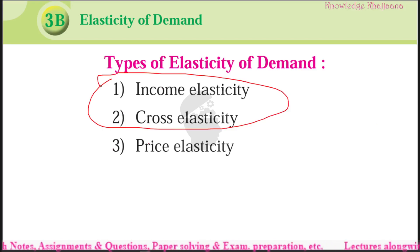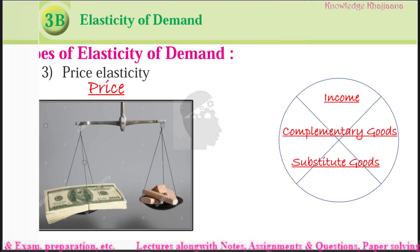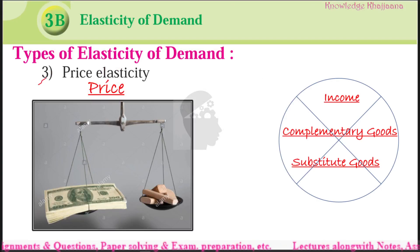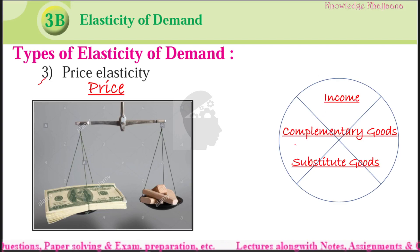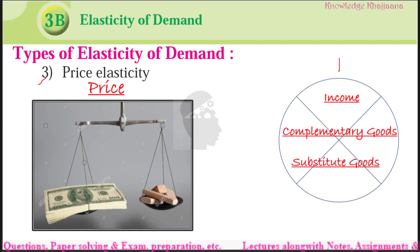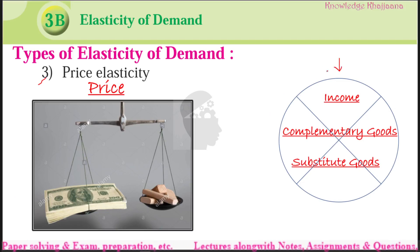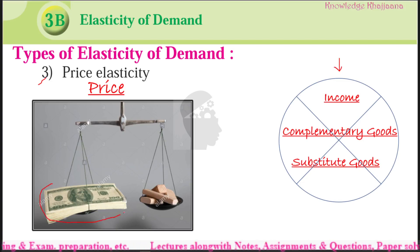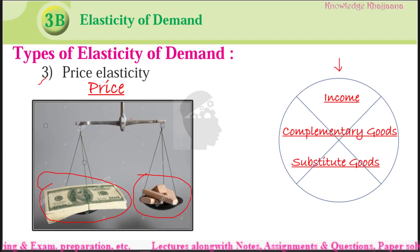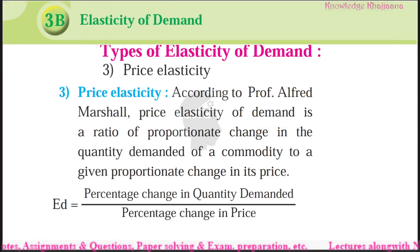We are going to learn price elasticity of demand. Other factors — income, complementary goods, substitute goods — those are considered fixed. We are not considering them here. We are going to learn how much of the demand of the commodity will change under price elasticity of demand.